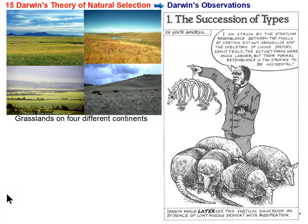Now we know what Darwin was reading about and the scientists that came before Darwin who were contributing to his thinking. But what did he observe while he was voyaging around on the HMS Beagle that led him to come up with the idea of natural selection?